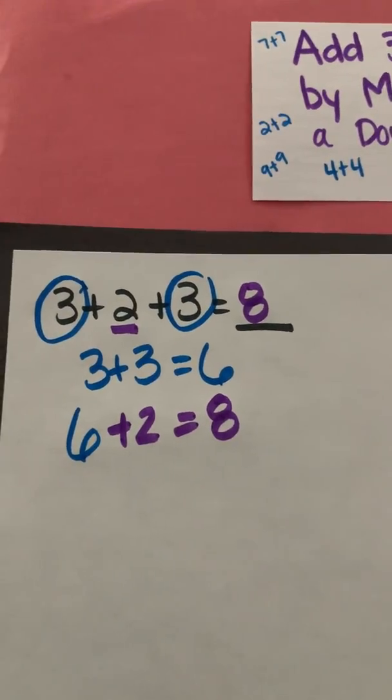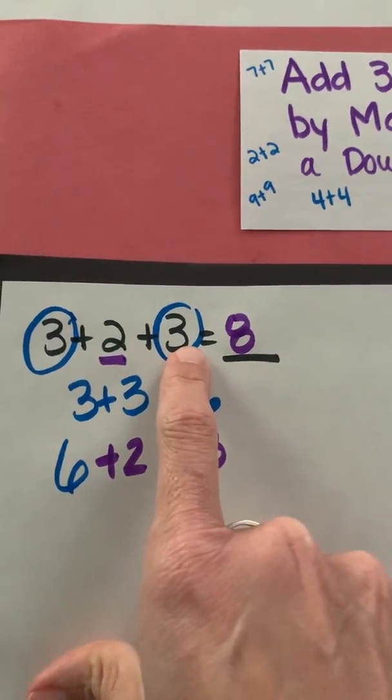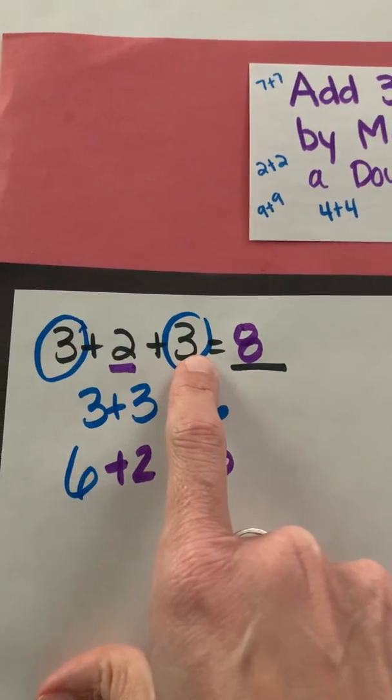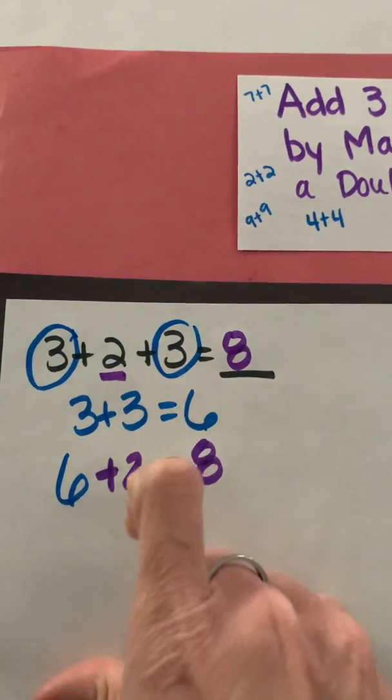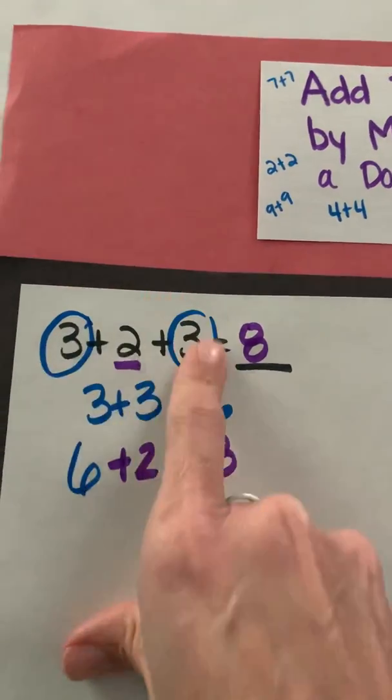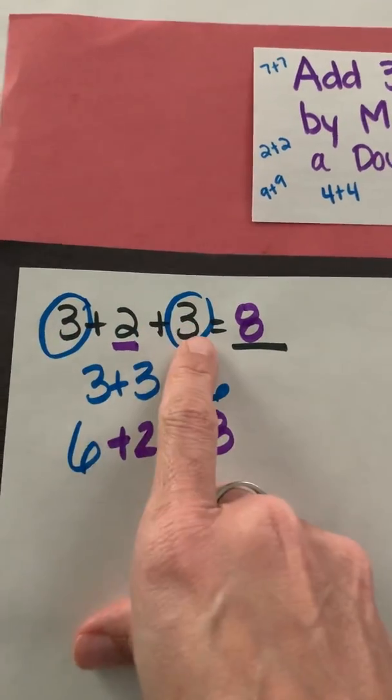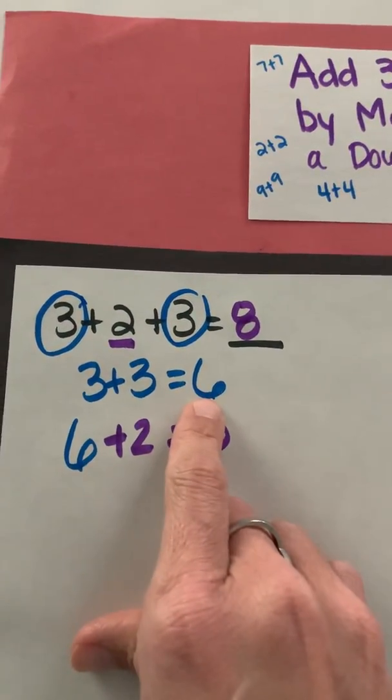So let's review what we did. We had three addends and I wanted to use a strategy of using my doubles first and then adding on what's left over. So I'm looking here and I recognize that 3 plus 3 is a double. So I added 3 plus 3 first and that gives me 6.